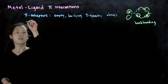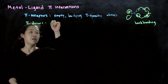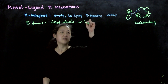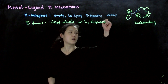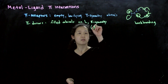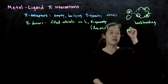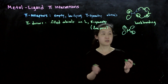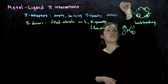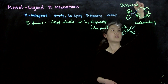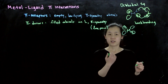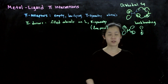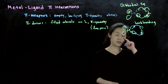For pi donors, we have filled orbitals on the ligand of pi symmetry. These are often lone pairs in perpendicular p orbitals. For a metal, it's the same set of orbitals with the same pi-symmetry — for octahedral, those are the T2g orbitals: dxy, dxz, dyz. But now our ligand has the filled electrons — for example, the p orbital on a halide anion. So now we're donating this way. This is pi donation.